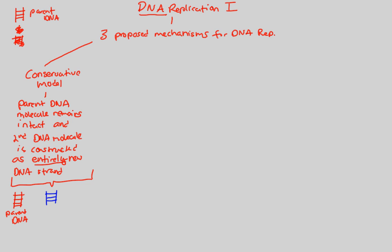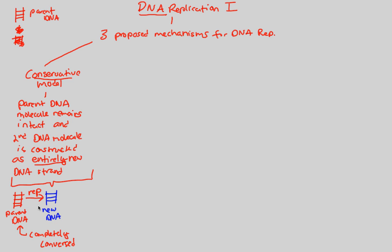This is how conservative model replication works — this new DNA is completely different from the parent. The parent DNA was completely conserved; that's why it's called the conservative model. It didn't change at all. We got a totally new, entirely new DNA strand from this replication process, leaving the parent DNA molecule absolutely the same as it was before. This seems like it makes sense, and many people believed it was the correct model, but it's a bit more complex.